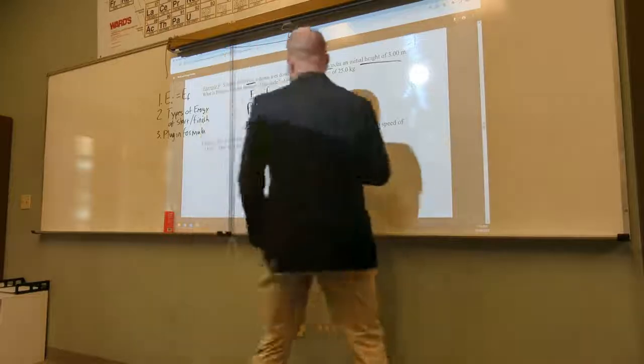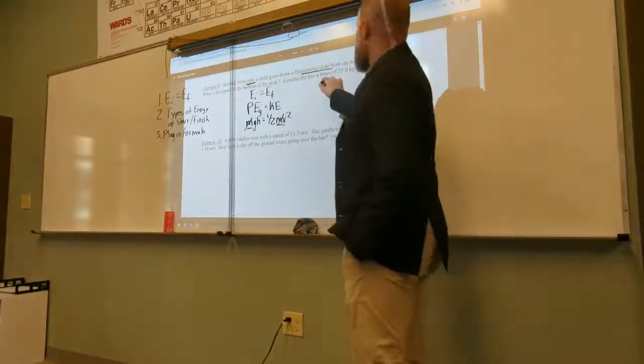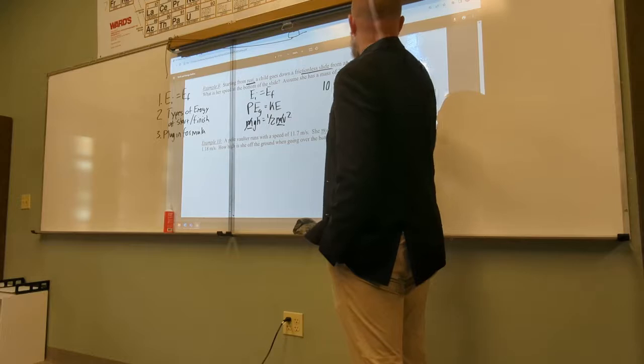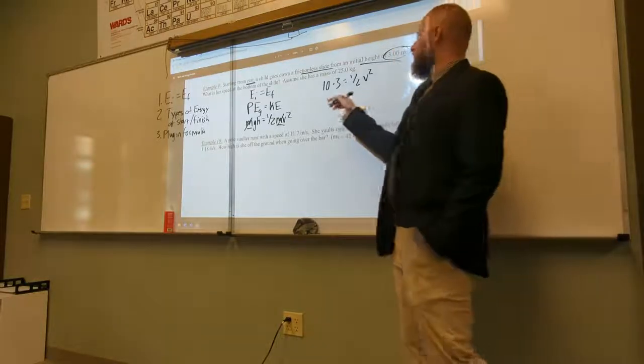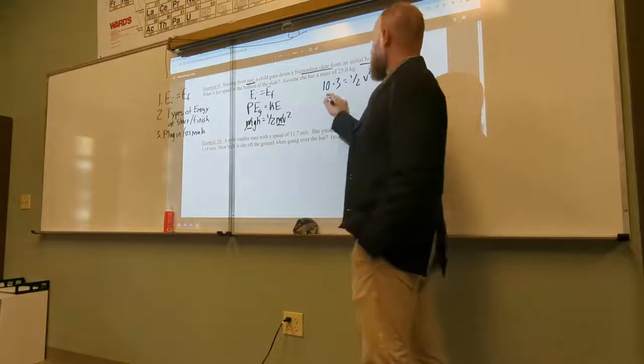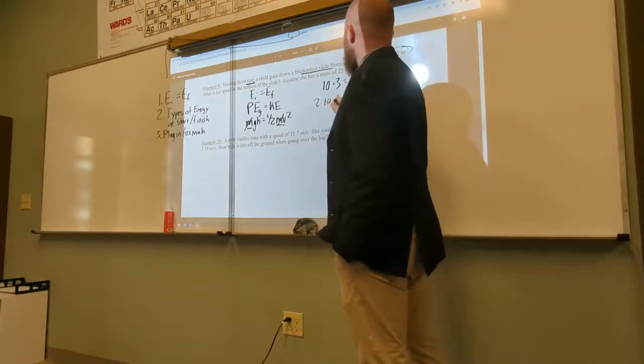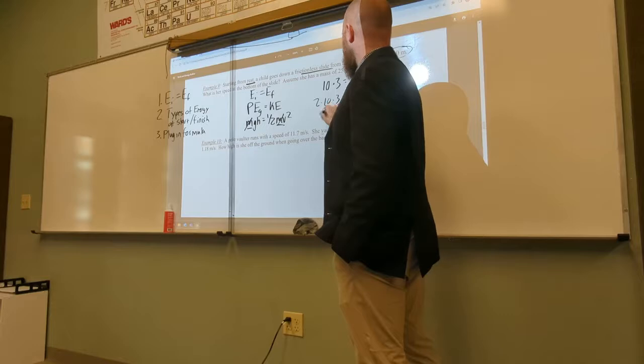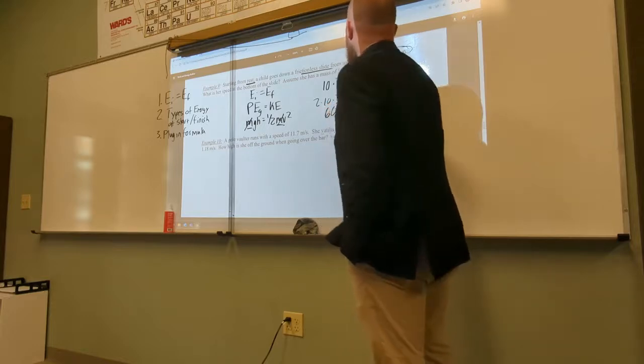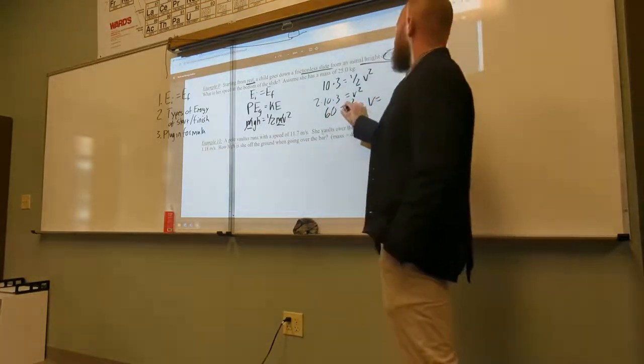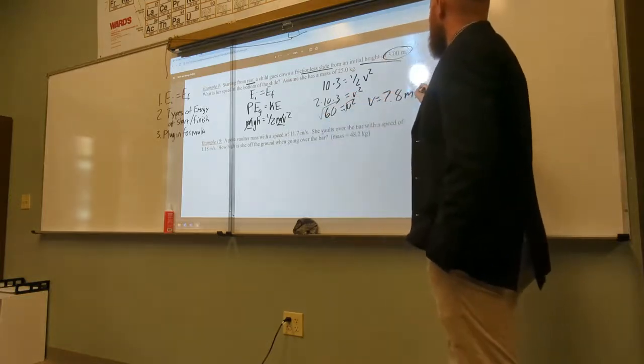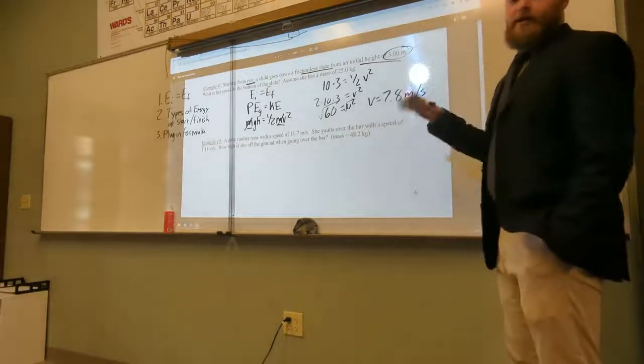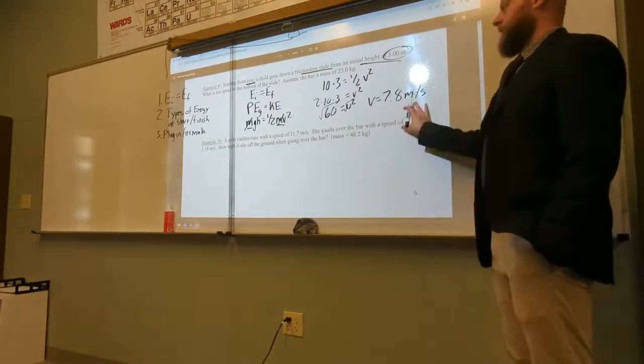So at this point, I now have G, which I'm going to just round to ten. So I have ten times H, which is three, equals one-half times V squared. And so now it's pretty simple. So I'm going to multiply by two to cancel out the one-half. So I'll have two times ten times three equals V squared. So I have sixty equals V squared. So V is going to be equal to the square root of sixty. Which should be about seven point eight meters per second. You might need a calculator to check exactly that, but it should be about that number.